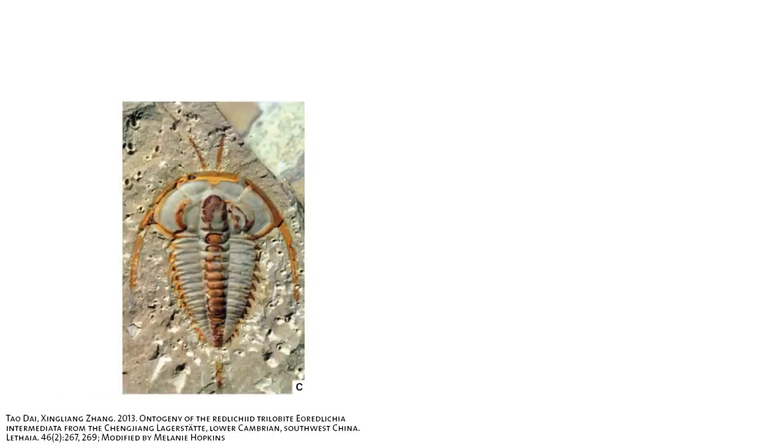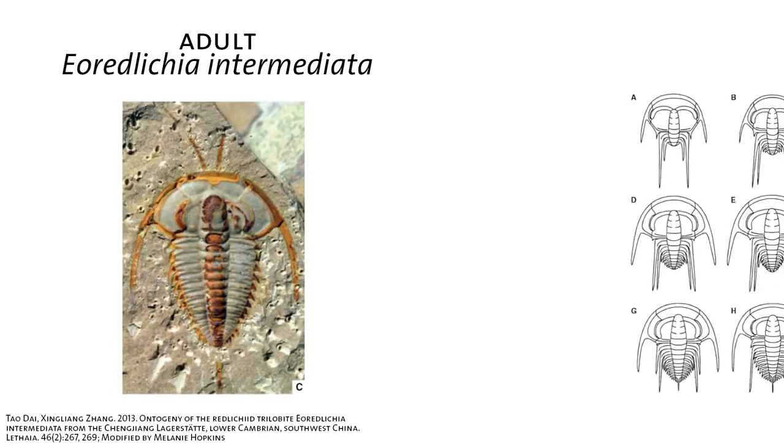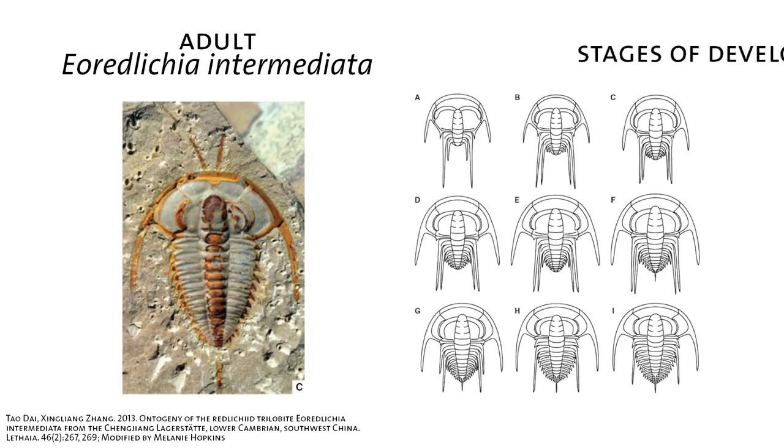But I would argue that the answer actually is in that growth model. And the reason is because, as all of these different parts are growing, they're also changing shape. So this is an example of a trilobite from Southwest China. The adult is shown in the picture of the actual fossil, and then all of these line drawings show different trilobite stages during development, starting with A in the left-hand corner and working across. And you'll probably notice right off the bat that the spines get shorter as the trilobite gets bigger. But there's also some more complex morphological changes happening too.